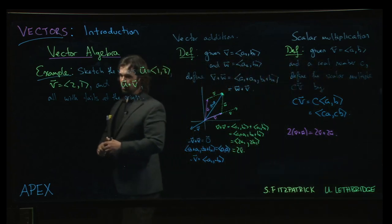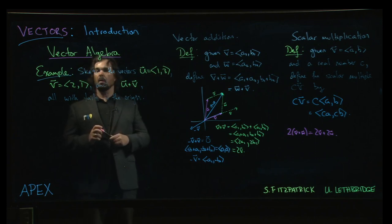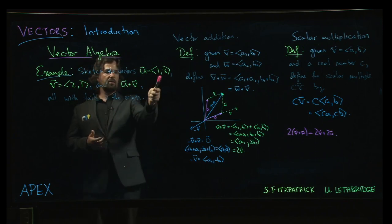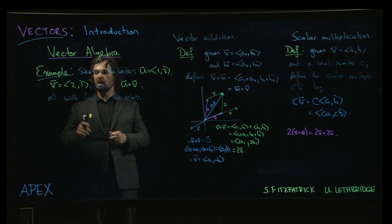All right, so let's do a quick example from the textbook. The problem asks us to sketch the vectors u, given by 1, 3, v, given by 2, 1, and u plus v, so the sum of the two.